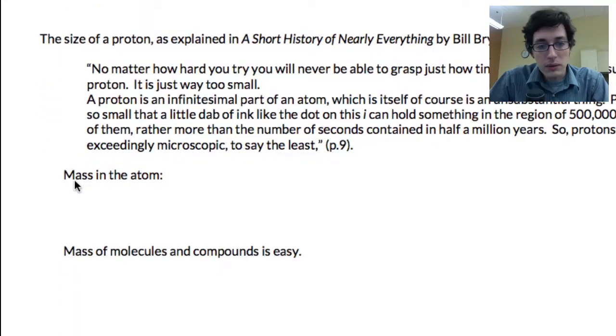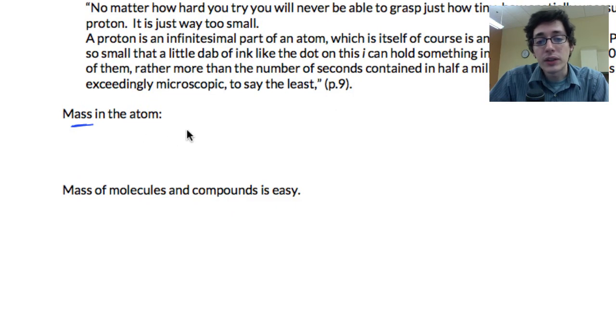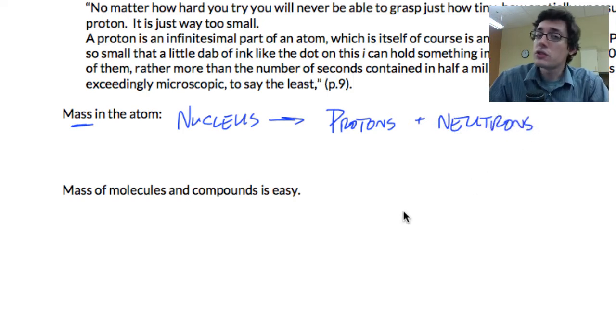We have to remember that all of the mass of the atom is found in the nucleus, and this is the combination of protons and neutrons. If we're being technical, electrons do have a mass, but it's so minuscule compared to protons and neutrons, we call them zero. So the mass of the atom is found in the nucleus, and it's the protons and the neutrons.